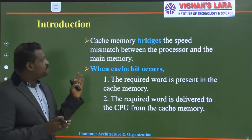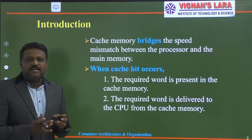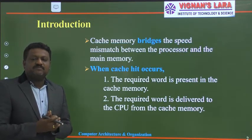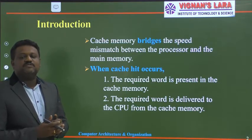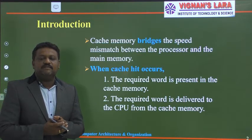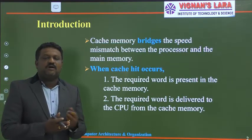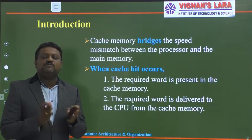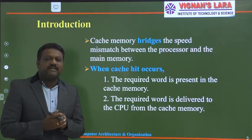Cache memory bridges the speed mismatch between processor and the main memory. If you didn't have any cache memory in the system, the speed of operation of the processor is high compared to the remaining devices. Whenever the processor wants to communicate with the memory, the processor has to wait a certain amount of time to perform a read or write operation, wasting valuable CPU time. To overcome this difficulty, we take the help of cache memories.